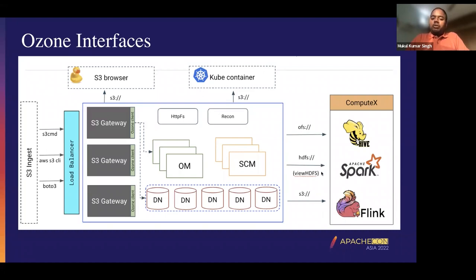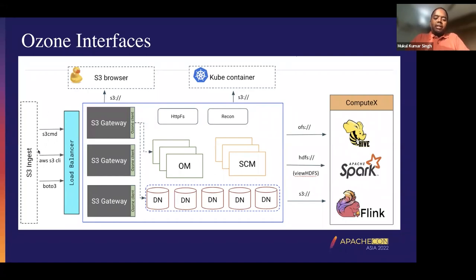Another thing we are also working on is support for adding a ViewFS layer. With this, we are adding support in the ViewFS mount table where users would be able to specify Ozone paths for a given file path — they would be able to specify that the file resides on Ozone. We also have ingestion which happens purely via S3, either via the AWS S3 CLI, the Boto Python client, or the S3 REST commands.